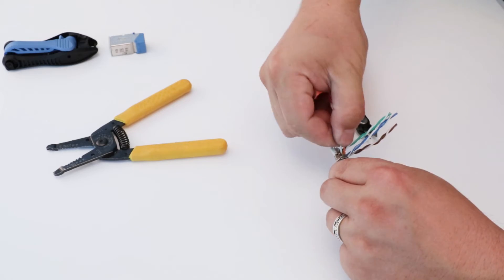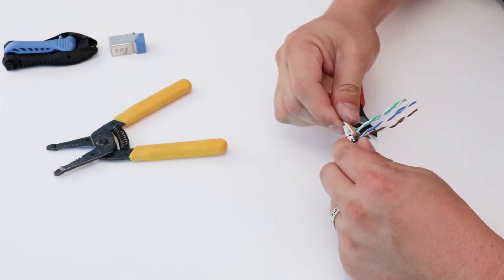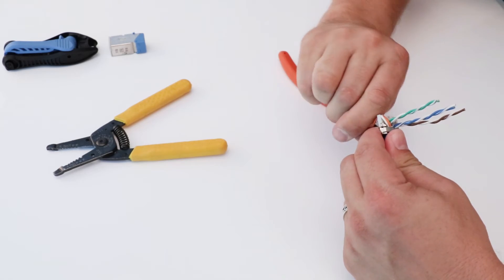Continue with the T568B scheme. Untwist each pair just enough until you are able to insert the wire into the appropriate color-coded channel of the termination module.